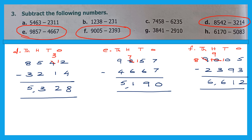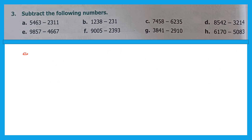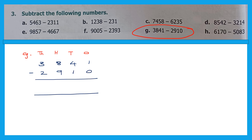Now let's go to question G. Write ones, tens, hundreds, thousands. The question is 3,841 minus 2,910. Ones: 1 minus 0 is 1. Tens: 4 minus 1 is 3. Hundreds: 8 minus 9 — can't do, so borrow; this becomes 2 and 18. 18 minus 9 is 9. Thousands: 2 minus 2 is 0. The answer is 931.